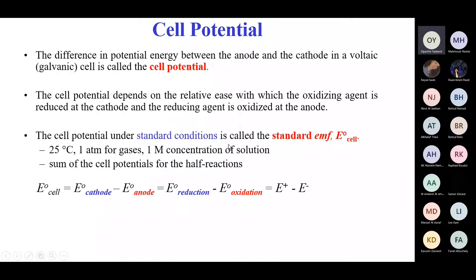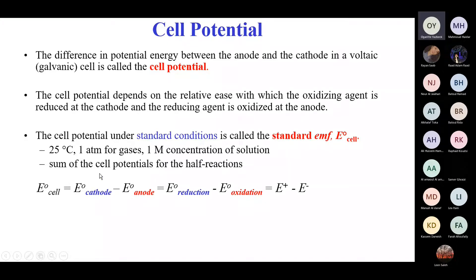Standard conditions means 25 degrees Celsius, one atmosphere for gases, and one molar for concentration of solution. We take the sum of the potentials for each half-reaction. Or equivalently, it is always the potential at the cathode minus the potential at the anode — the potential of the reduction half minus the potential of the oxidation half.